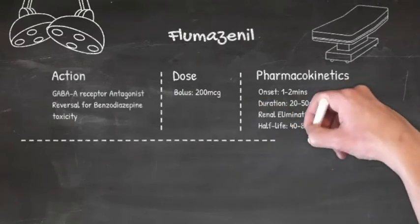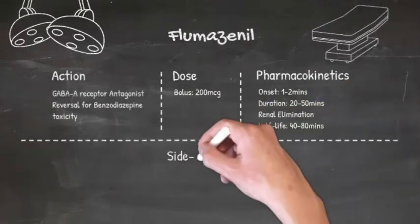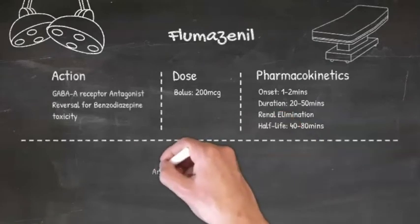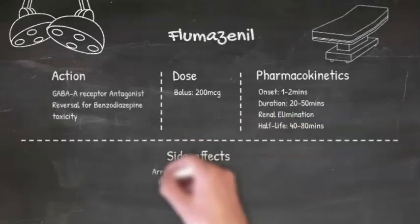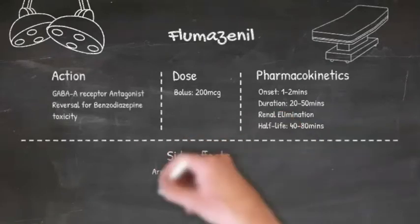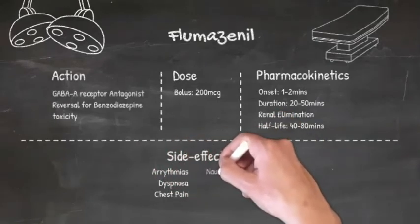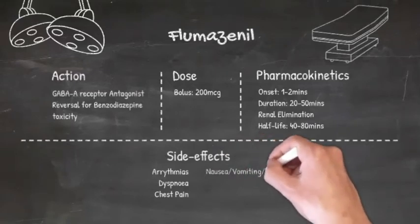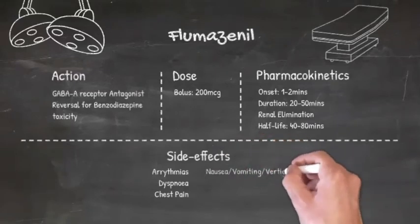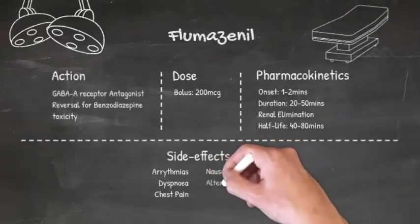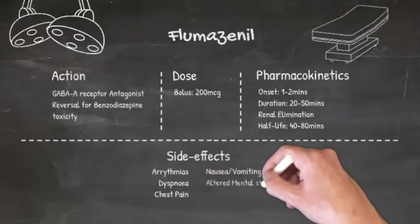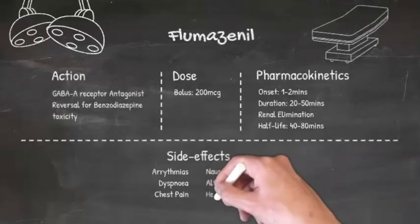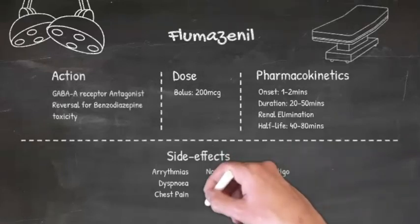Flumazenil is eliminated renally with a half-life of only 40-80 minutes. In terms of its side effects, flumazenil can cause arrhythmias, dyspnea and chest pain, nausea and vomiting, altered mental states such as agitation and confusion, vertigo, headaches, and even seizures.